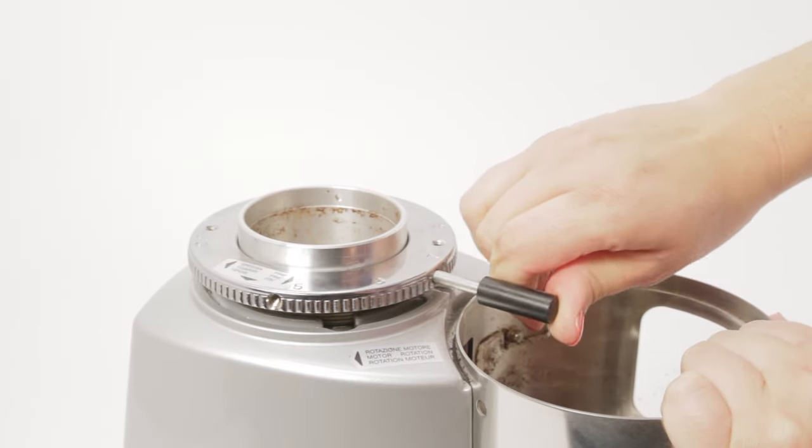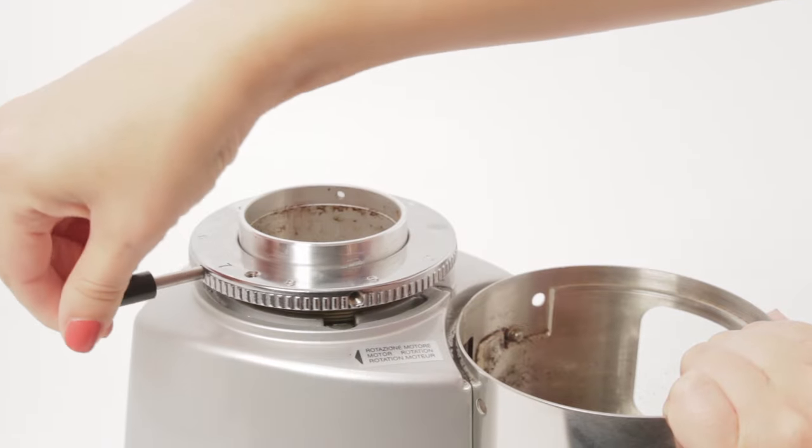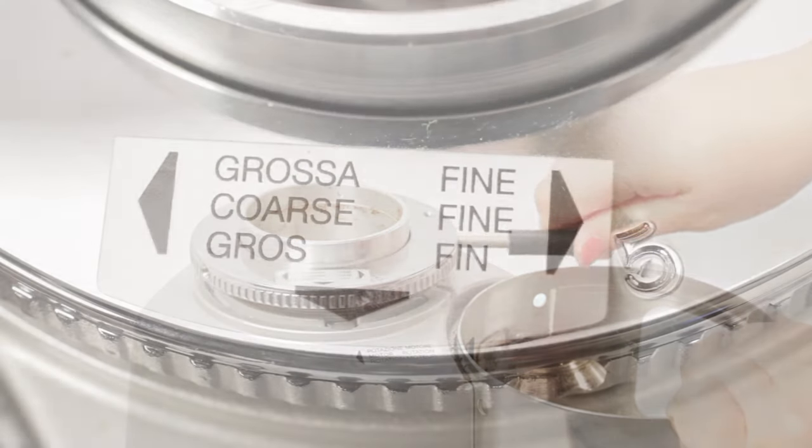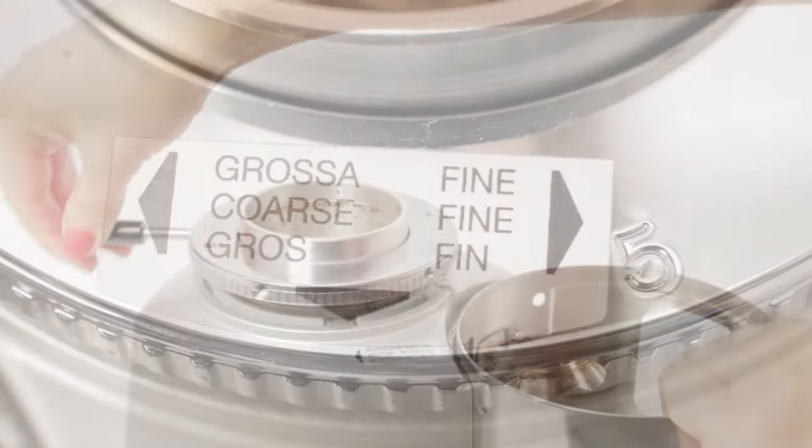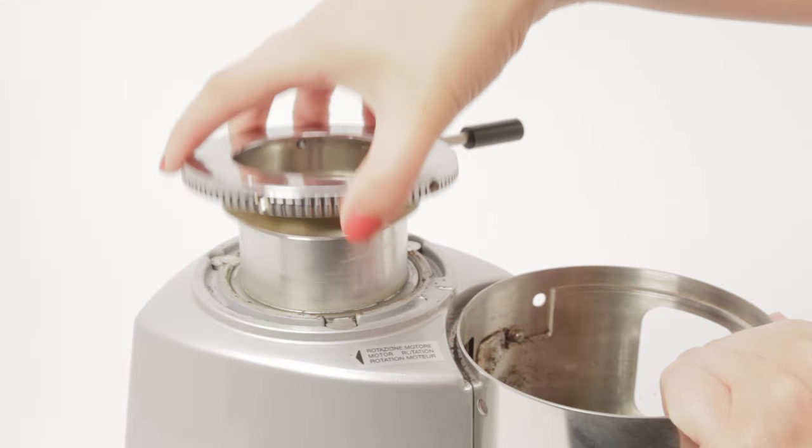Now turn the adjustment collar clockwise to remove. On a few grinders, you will turn counter-clockwise to remove. No matter the type of grinder, always turn towards a coarser setting to remove the adjustment collar.